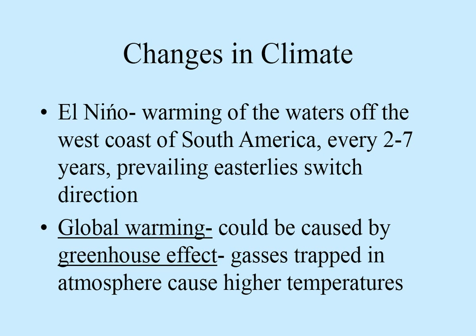Changes in climate: El Niño — those are winds coming off the waters of the west coast of South America, and the warming of those waters. And then global warming — whether it's true or not, gases being trapped in the atmosphere, combined with the sun, adds higher temperatures. These higher temperatures obviously have an effect on certain parts of the world, specifically the poles where our ice is.